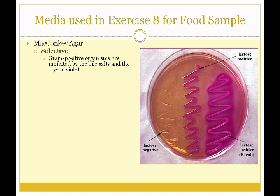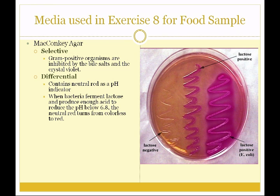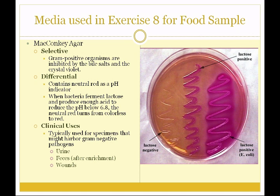MacConkey agar is selective — it has bile salts and crystal violet, which inhibit gram-positive organisms and let gram-negatives flourish. It is also differential; it has neutral red as a pH indicator, and its differentiating capacity is based on lactose fermentation, just like EMB. When bacteria ferment lactose and produce enough acid to reduce the pH below 6.8, the neutral red turns from colorless to red. So a lactose-positive organism will be pink or red, and a lactose-negative organism will be colorless. MacConkey agar is used for urine, feces after enrichment, and wound cultures.